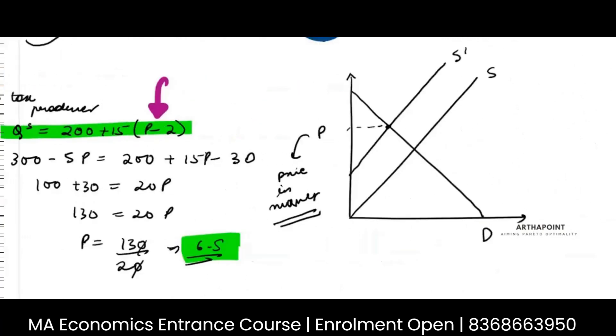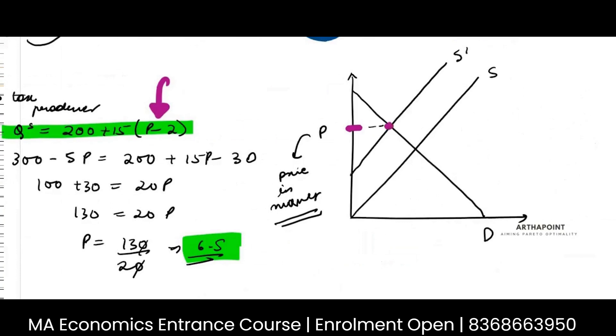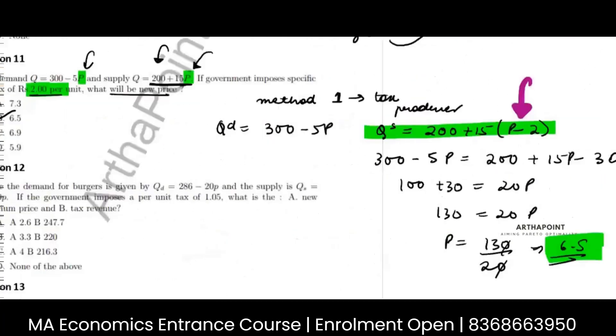In that case, you will subtract 2 from the supply side. In that case, the net price is already found out. This is where the two are intersecting. And the supplier is receiving here. But this is what my equilibrium intersection is. So either method, but you have to be careful what you are doing.